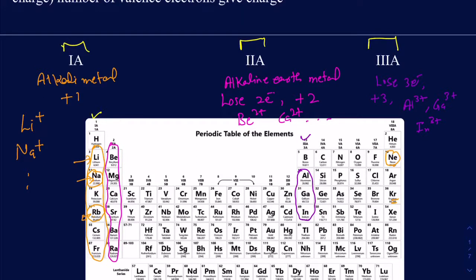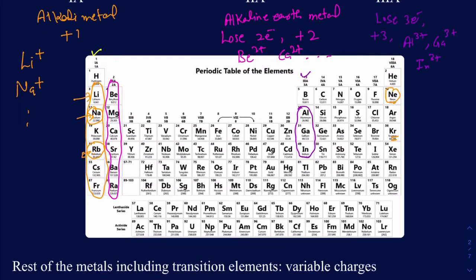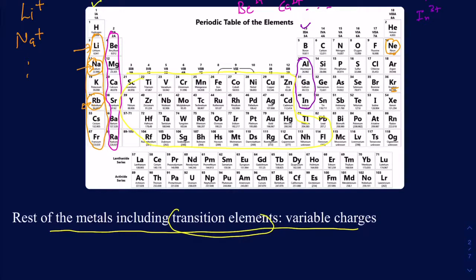Those are the first three groups you have to worry about — they have fixed charges. Make sure you know which groups have fixed charges and which metals have variable charges. Any other metals in the periodic table — including transition metals — will have variable charges. Since they have variable charges, you cannot rely on their position in the periodic table. To figure out the charge, you rely on the anion.